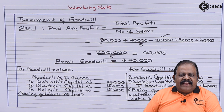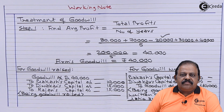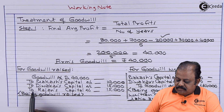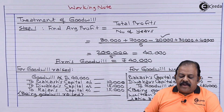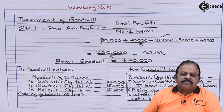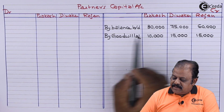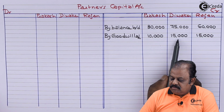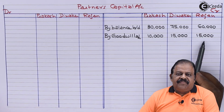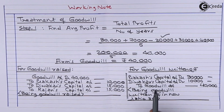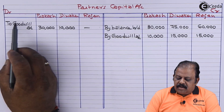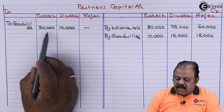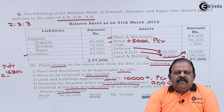Entry for goodwill raised: goodwill account debit 40,000, to Prakash's capital account 10,000, Diwakar's capital account 15,000, Rajan's capital account 15,000. Accordingly posted in capital accounts on the credit side. For goodwill written off: Prakash's capital account debit 30,000 and Diwakar's capital account debit 10,000, to goodwill account 40,000. We have completed the adjustment of goodwill.